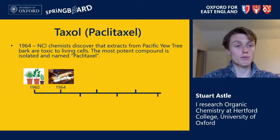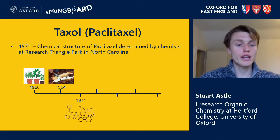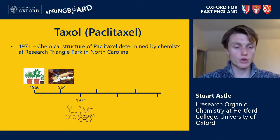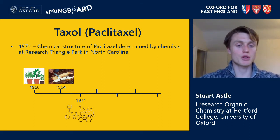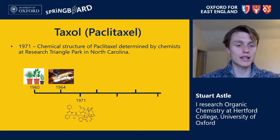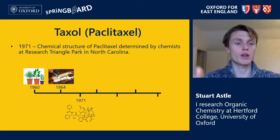The most potent of these compounds was isolated and named paclitaxel. A few years after its discovery, the chemical structure of paclitaxel was elucidated — chemists were able to discover what its chemical structure was. It's shown here at the bottom of the slide, and I'm sure you'll all agree it's an awful lot more complicated than the structure of salicylic acid. We'll have a closer look at the chemical structure of paclitaxel later.